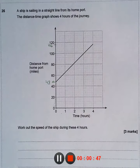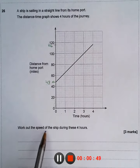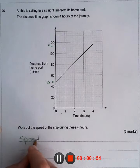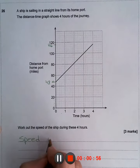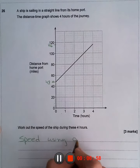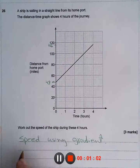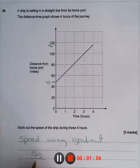Now we want to work out the speed of the ship during the four hours. Speed can be found using the gradient, so it's delta y over delta x.